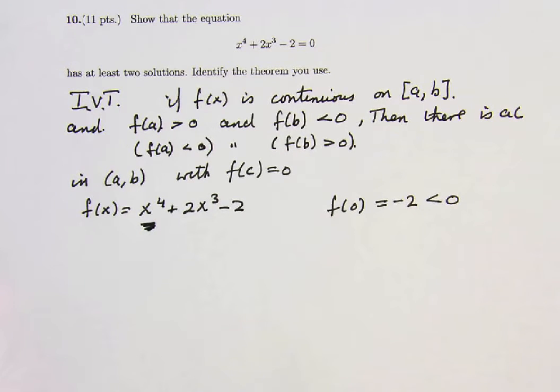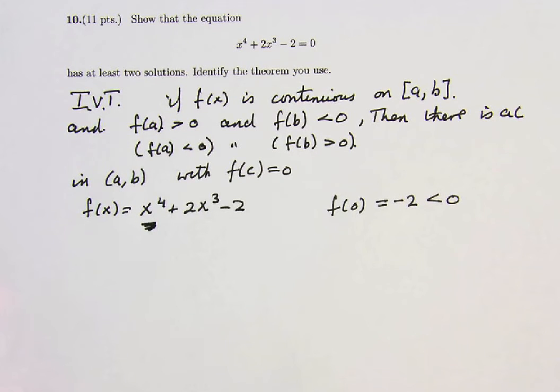And as x approaches negative infinity, also the x to the 4 takes over, and the values of the function approach plus infinity. So if I take x large enough in absolute value, then this function must get positive.